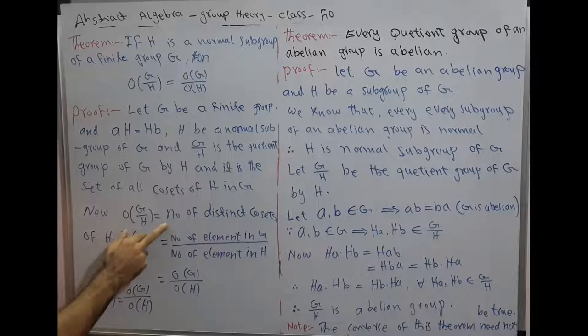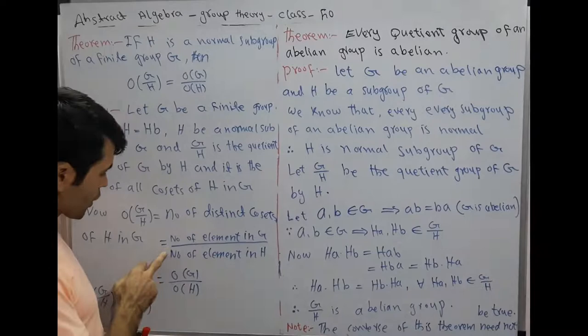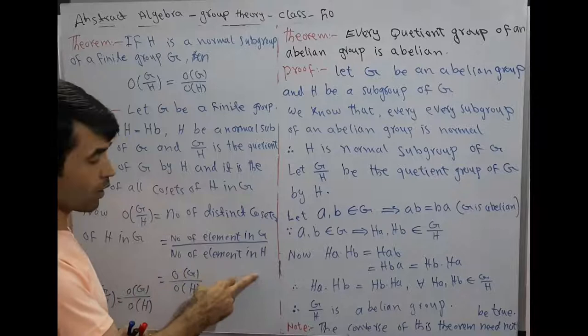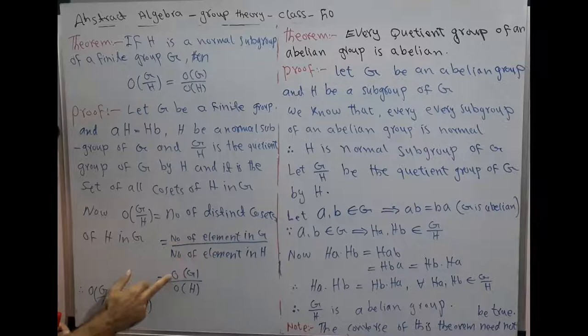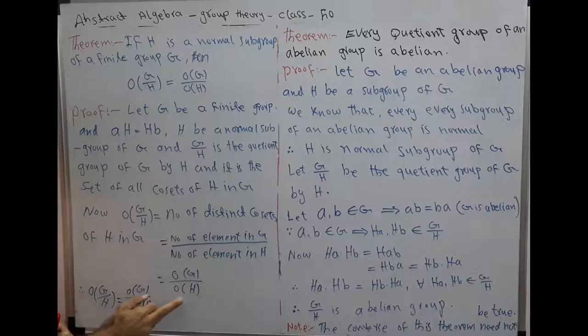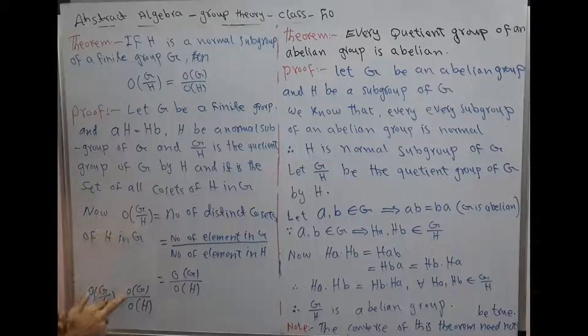The order of the quotient group is equal to the number of elements in G divided by the number of elements in H. This equals O(G) divided by O(H). Therefore, O(G/H) is equal to O(G) by O(H), or we can say the order of the quotient group is equal to the order of G divided by the order of H.